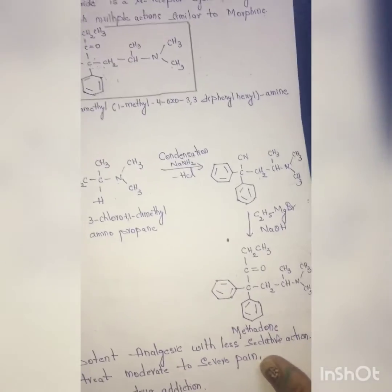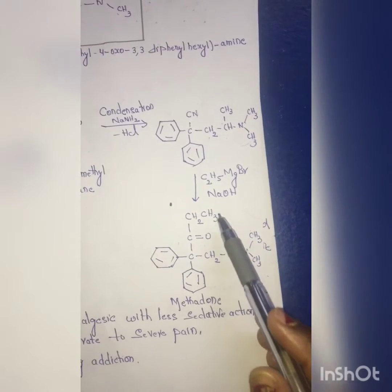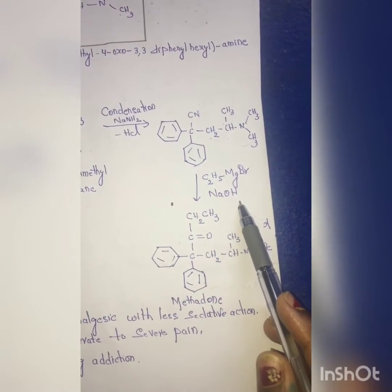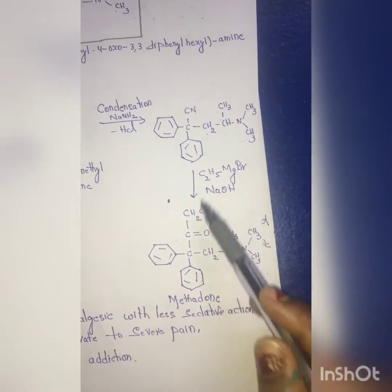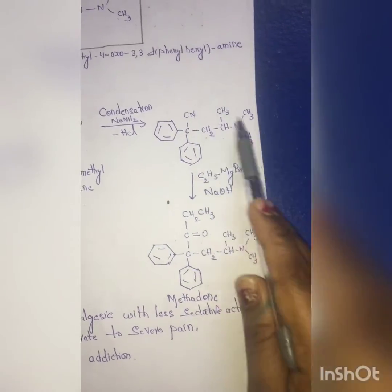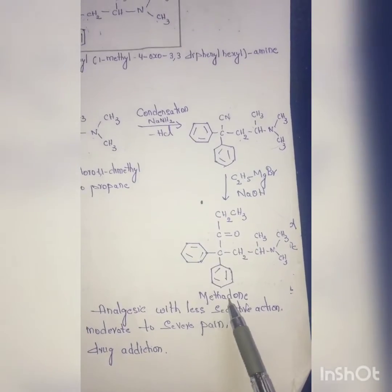This intermediate reacts with C2H5MgBr, a Grignard reagent (R-MgX), in the presence of NaOH. The CN group is converted to C=O, and the C2H5 group is attached, forming methadone.